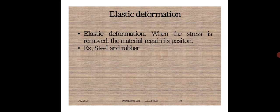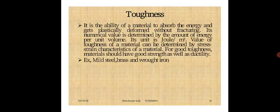Next is Toughness. It is the property of a material by virtue of which it can absorb maximum energy before fracture takes place. It is measured by the hardness of the material — it absorbs the maximum energy before fracture. Examples of tough materials are mild steel, brass, and wrought iron.